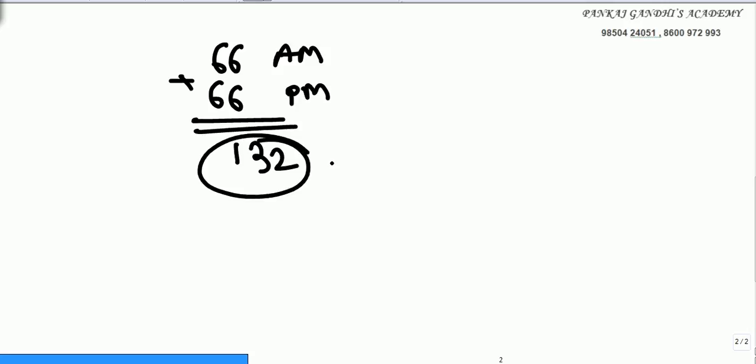Now the question given says here, the time difference between the two intervals is 1 second. We got 66 intervals for AM, same 66 intervals for PM, total 132 intervals.